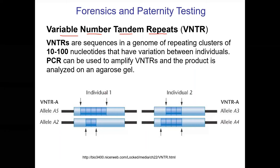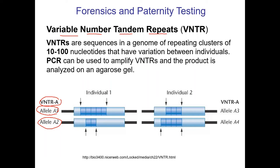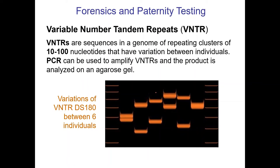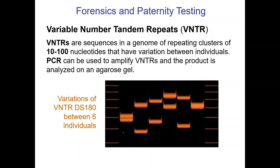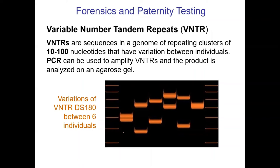You can see an allele here — VNTR allele A. One individual might have a5 and a2 (remember, we have two copies of every chromosome, one from mom and one from dad). Individual two has two different alleles. We PCR out that region and run it on a gel. Here's an actual gel showing six individuals — even looking at just one allele, we see a decent amount of differences. We call this technique DNA fingerprinting, because everyone has a unique pattern.